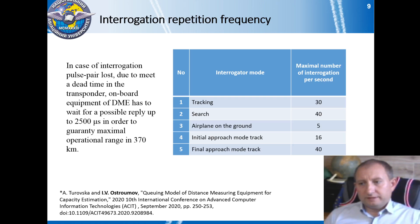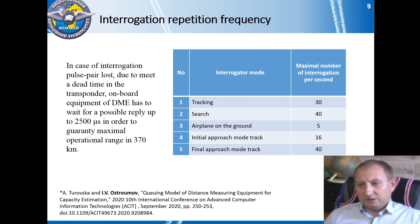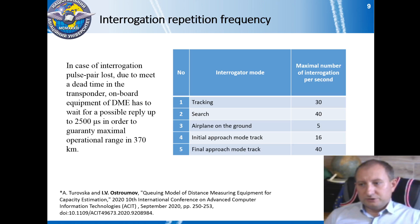In case an interrogation pulse pair is lost due to the dead time in the DME transponder, the onboard DME interrogator must wait for a possible reply up to 2500 microseconds, in order to guarantee a maximum operational range of approximately 370 kilometers. An airplane interrogator uses different interrogation repetition frequencies due to limited transponder capacity. The maximum number of interrogations per second for different DME operational modes is represented in a table.